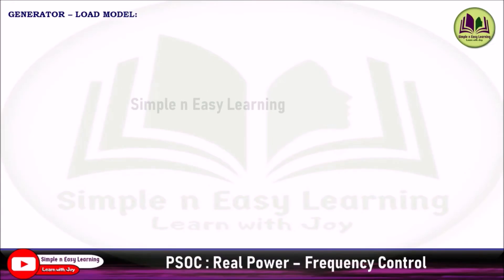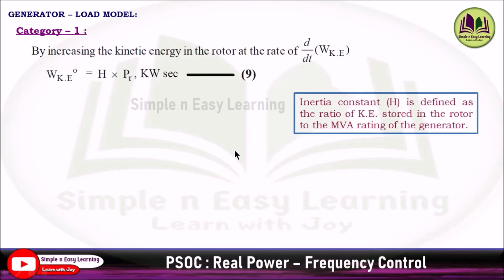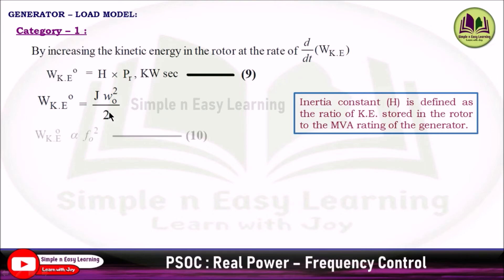Category 1: increasing the kinetic energy in the rotor at the rate d/dt(Wke). The initial kinetic energy is Wke₀ = H × Pr kilowatt-seconds (Equation 9), where H is the inertia constant — defined as the ratio of kinetic energy stored in the rotor to the MVA rating of the generator. The kinetic energy is given as ½·J·ω₀², where J is the moment of inertia and ω₀ is the angular velocity.